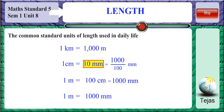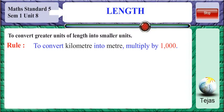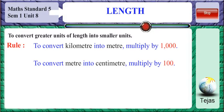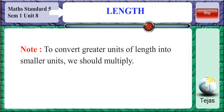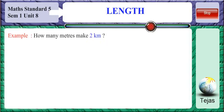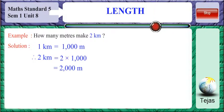Conversion of units from one length to another: to convert greater units into smaller units, we multiply. To convert kilometers into meters, multiply by 1000. To convert meters into centimeters, multiply by 100. To convert centimeters into millimeters, multiply by 10. For example: 2 kilometers equals 1000 × 2 = 2000 meters. Therefore, 2000 meters make 2 kilometers.